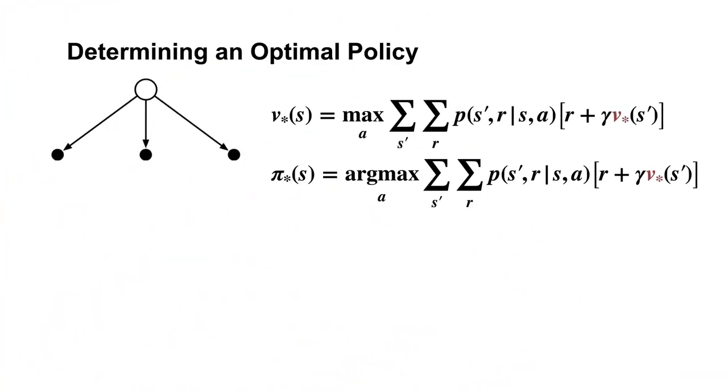In general, having V-star makes it relatively easy to work out the optimal policy as long as we also have access to the dynamics function P. For any state, we can look at each available action and evaluate the boxed term.